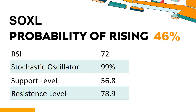Is SOXL trading above or below its moving averages? Technical Signals and Analysis: SOXL's 14-Day Relative Strength Index (RSI) value was 72. When the RSI is between 50 and 70, it generally indicates that the stock is moderately bullish. This means that the security's price has been rising but has not yet reached overbought levels, which are usually considered an RSI reading of 75 or higher.